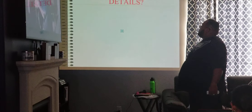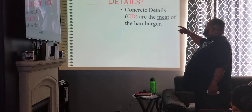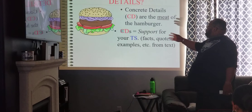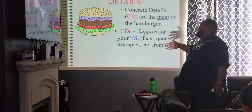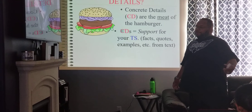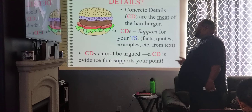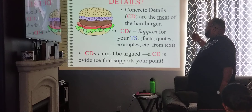Step two: what are concrete details? Concrete details are the meat of the hamburger. Concrete details support your topic sentence — your facts, your quotes, your examples, etc., from the text. Something that you have taken from your reading and applied as support for the topic sentence. Concrete details cannot be argued. A concrete detail is evidence that supports your point, taken directly from the text — quotes, examples, things of that sort.